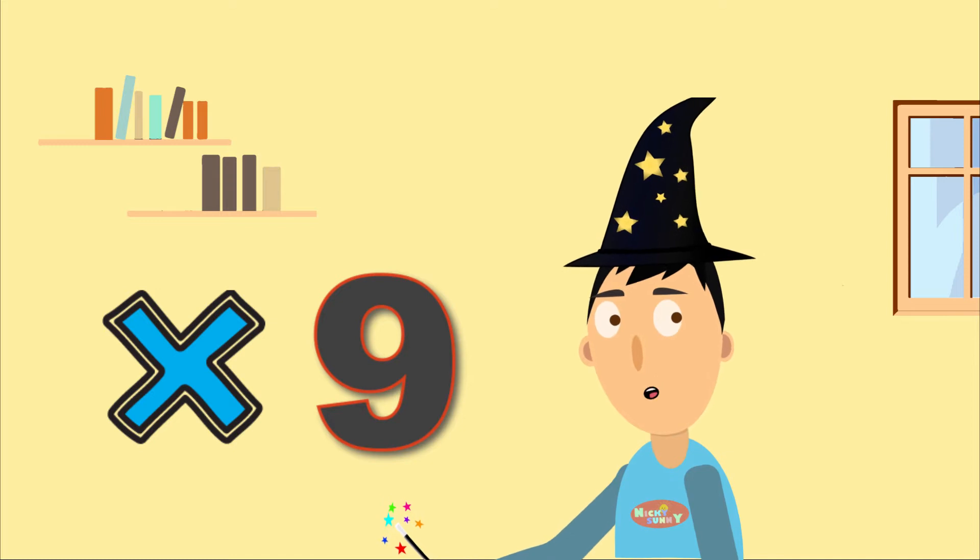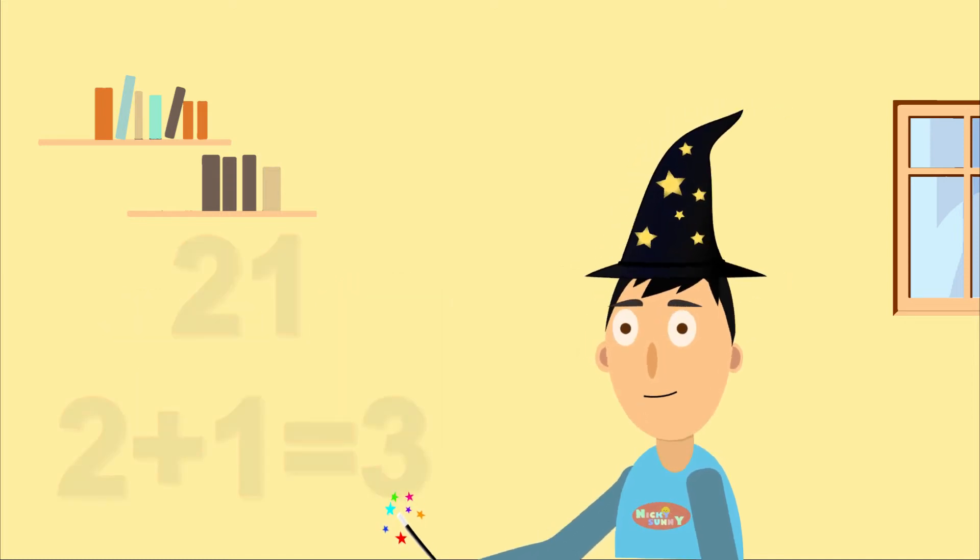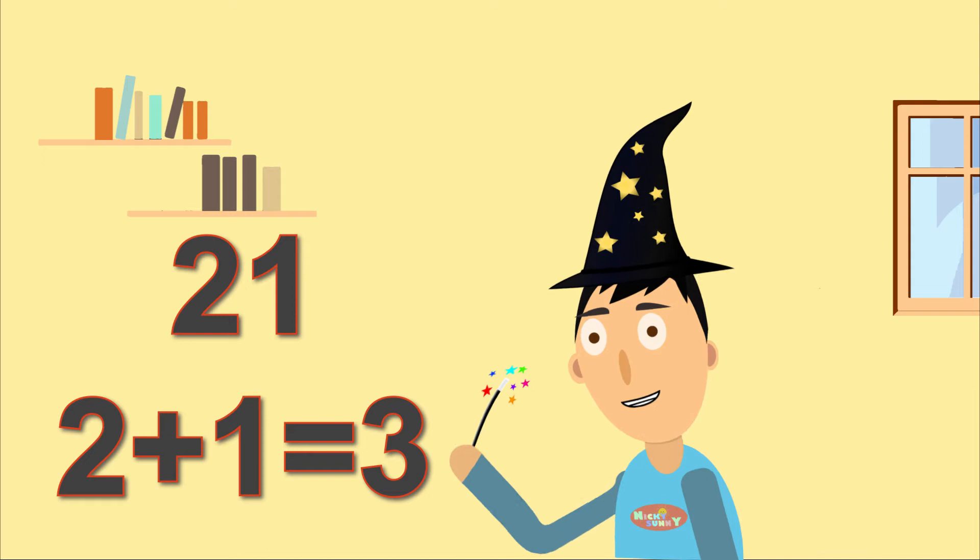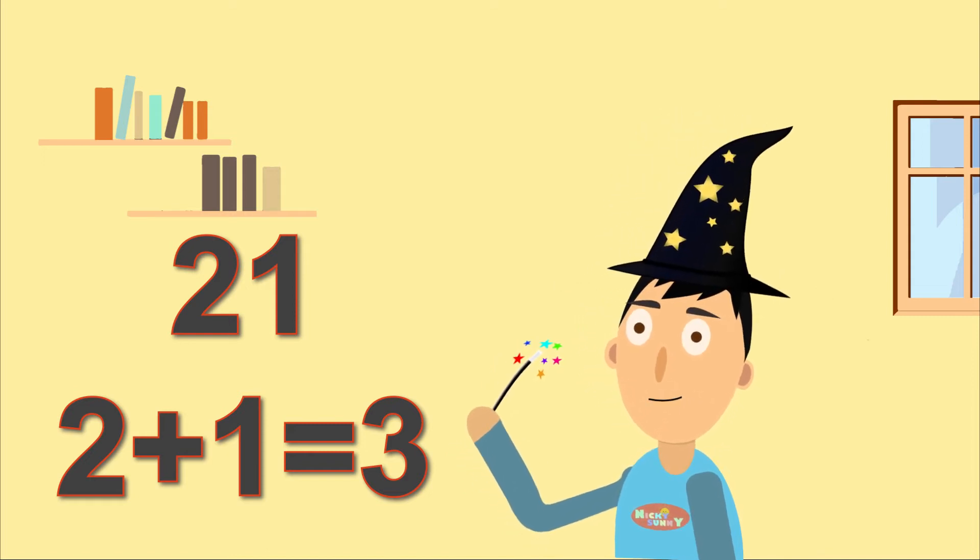All right, then add the two digit numbers together if there are two. For example, the numeral 21 is made up of two digits, so add 2 plus 1. Does it make sense?